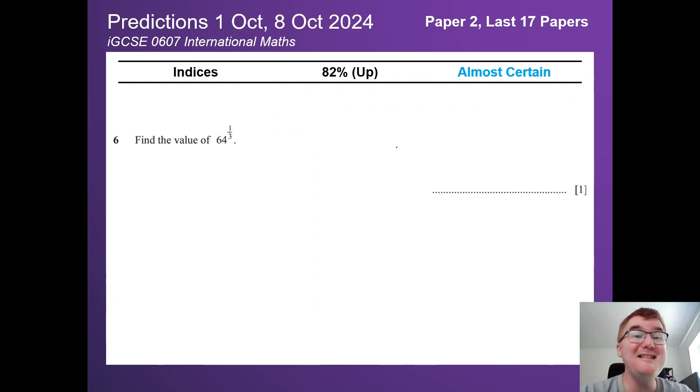Hello and welcome to another Ginge Math Petition video. Today we're predicting the IGCSE International Maths, course 0607. This has been a frequently requested video. Just like last year, we look at the last 17 papers to make sure these predictions are completely up to date with the exams on the 1st and 8th of October for paper 4.